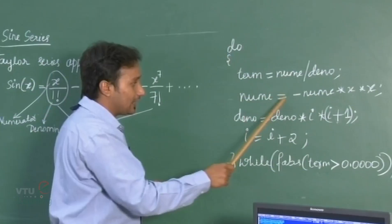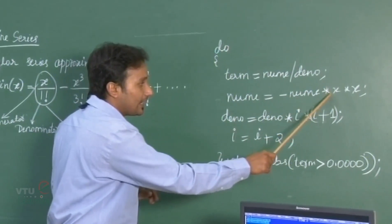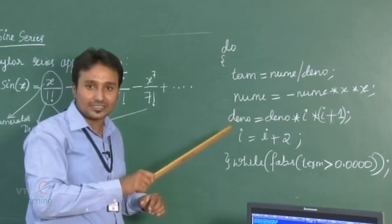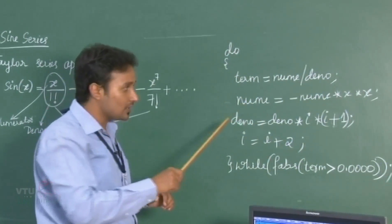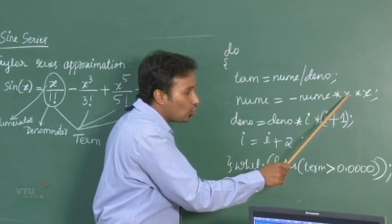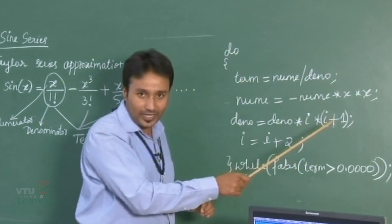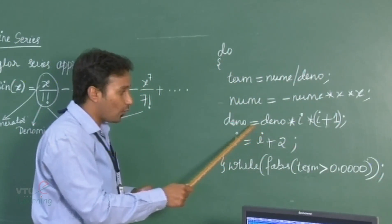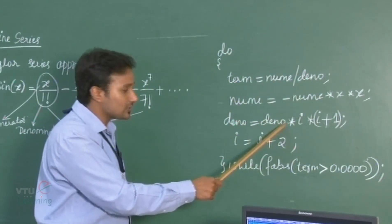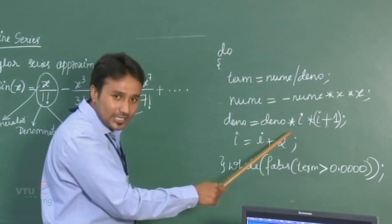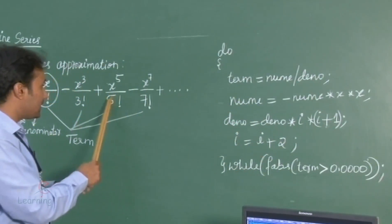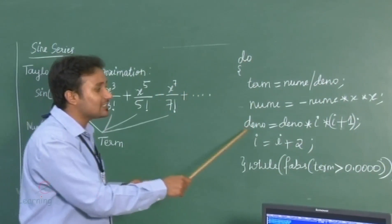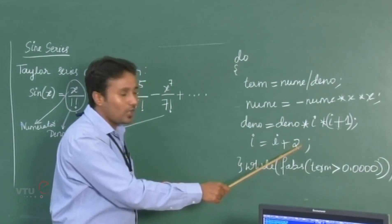Next, numerator equals minus numerator multiplied by x multiplied by x. This minus is due to the alternating sign of plus and minus in each and every term, along with the x and x factors. In the denominator part we have deno equals deno multiplied by i multiplied by i plus 1. This is because we need to increment each and every denominator by the value 2 and correspondingly calculate its factorial.